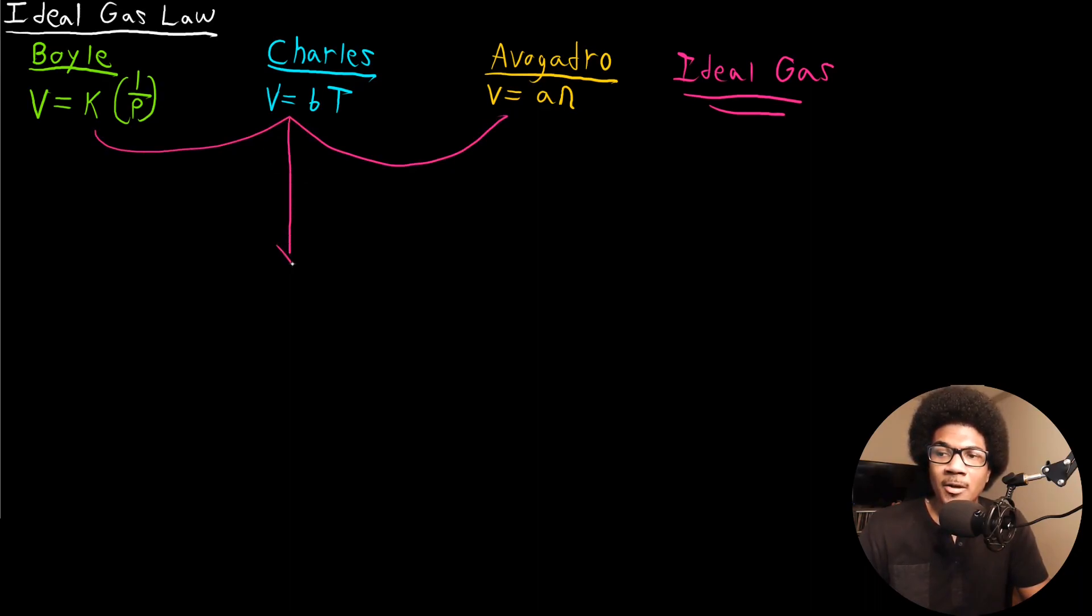If we combine all three Boyle's law, Charles's law, Avogadro's law, we have a relationship for volume that relates it to temperature, pressure, and the number of moles. We'll have one unifying constant for volume's relationship to all three of these properties.